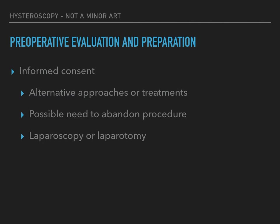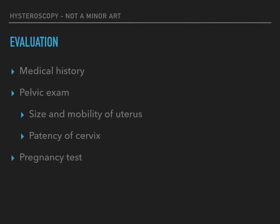Women should be counselled about alternative diagnostic or treatment approaches, and informed consent regarding expected treatment success and possible complications should be taken. This should include the possible need to abandon or prematurely stop a procedure due to fluid overload. Since uterine perforation is a possible complication, patients should consent to a possible laparoscopy or laparotomy if it becomes necessary to rule out visceral or vascular injury. When evaluating patients for hysteroscopy, a medical history is taken, including detailed questions regarding symptoms, obstetric and surgical history, medical comorbidities, medications, and allergies. A complete pelvic and general physical examination should be performed with particular attention to the size and mobility of the uterus and patency of the cervix.